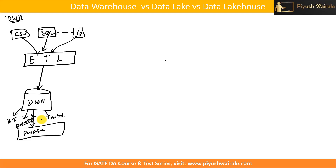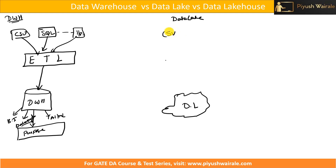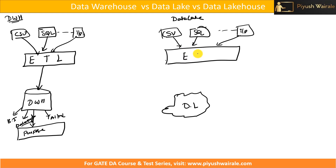Now, what is a data lake? In a data lake, same thing — we have data coming from multiple input sources, for example CSV, SQL, and other types. In the case of a data lake, we extract the data and then directly load the data into a data lake. Unlike a data warehouse where we perform ETL, in a data lake we extract and load first, then transform according to our requirement.